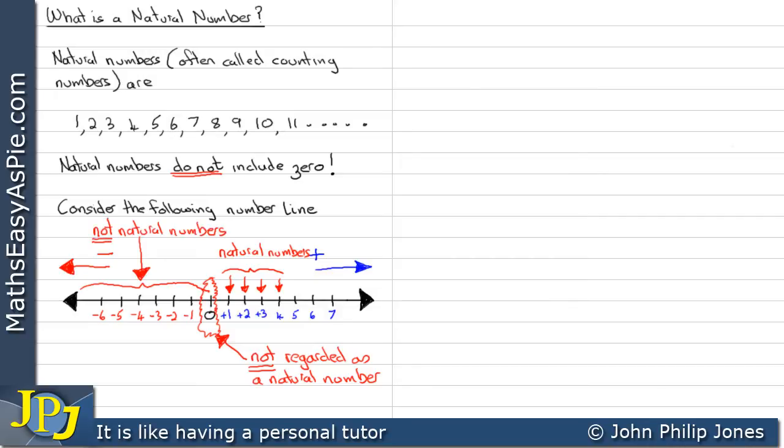For example, what is a negative goat? Doesn't make any sense. We can also come here and mark this point on the number line, and that's five and a half. Now that is also not a natural number. So we need to understand natural numbers from the viewpoint of the number line, because it gives us a handy way to visualize what's happening when we deal with all of the number systems that are possible within mathematics.